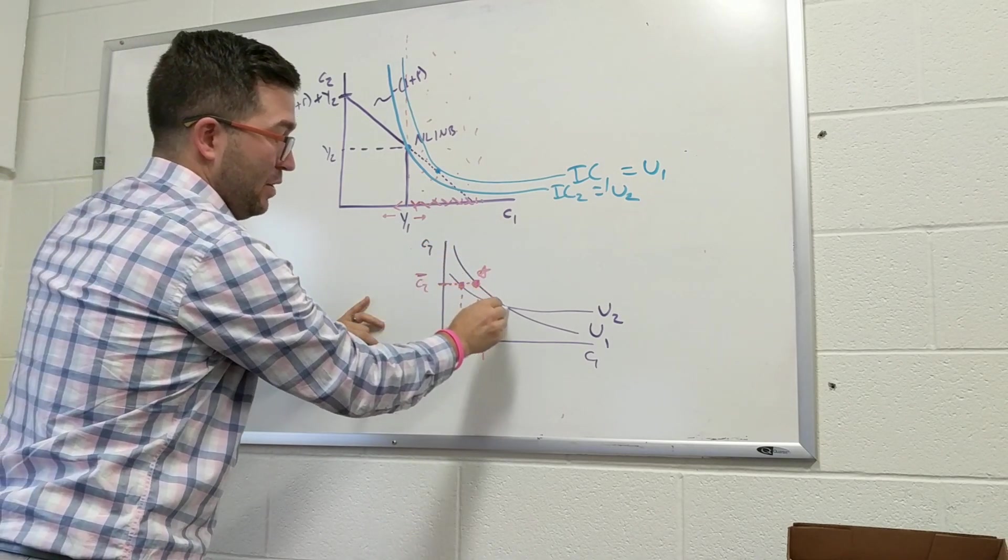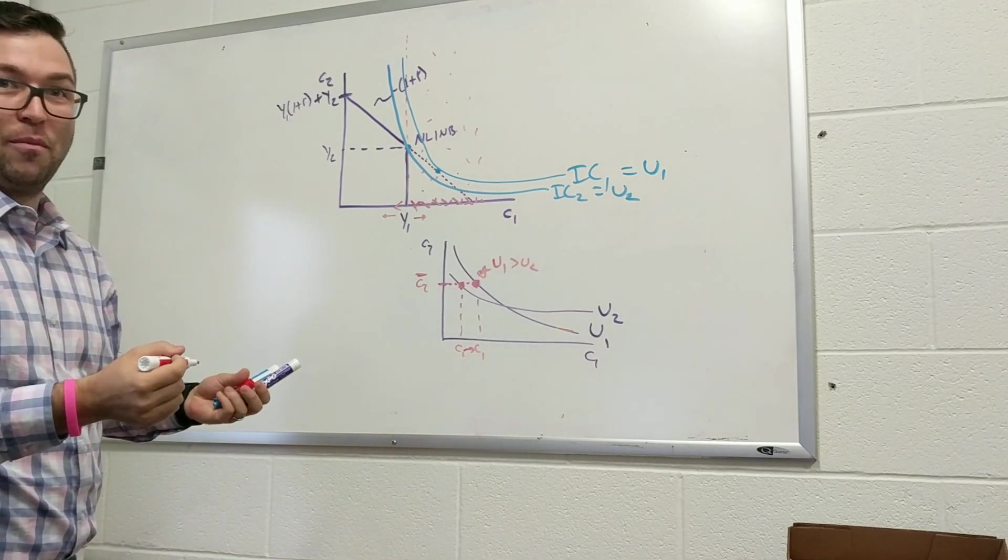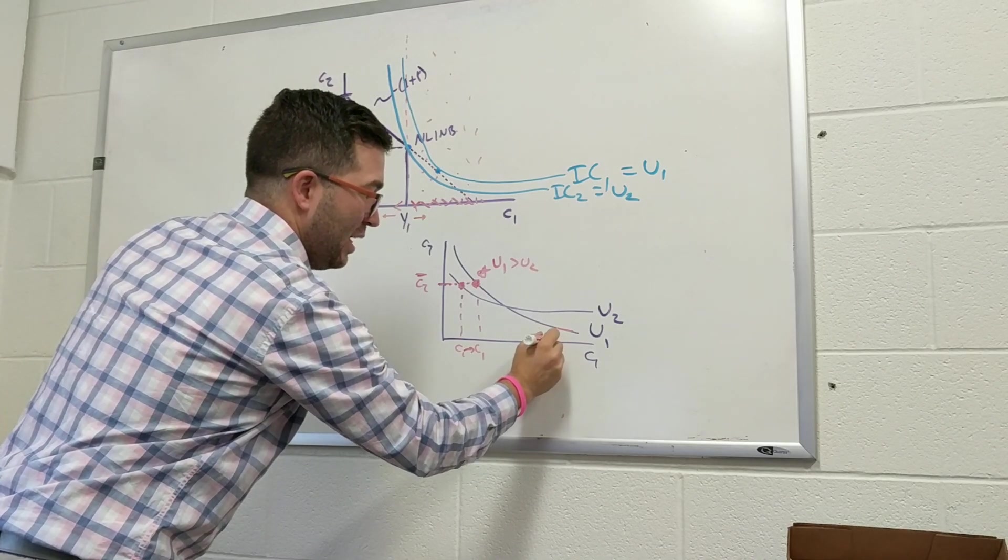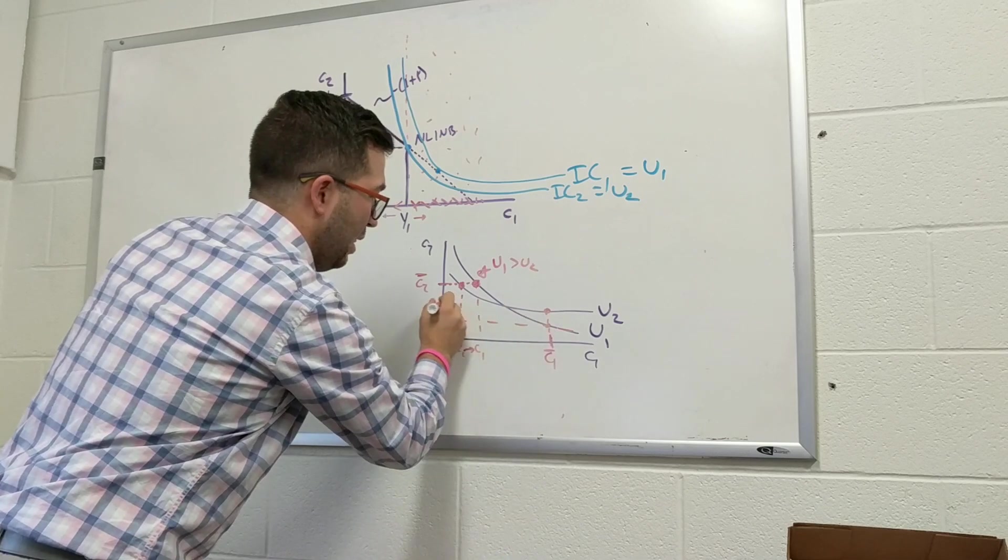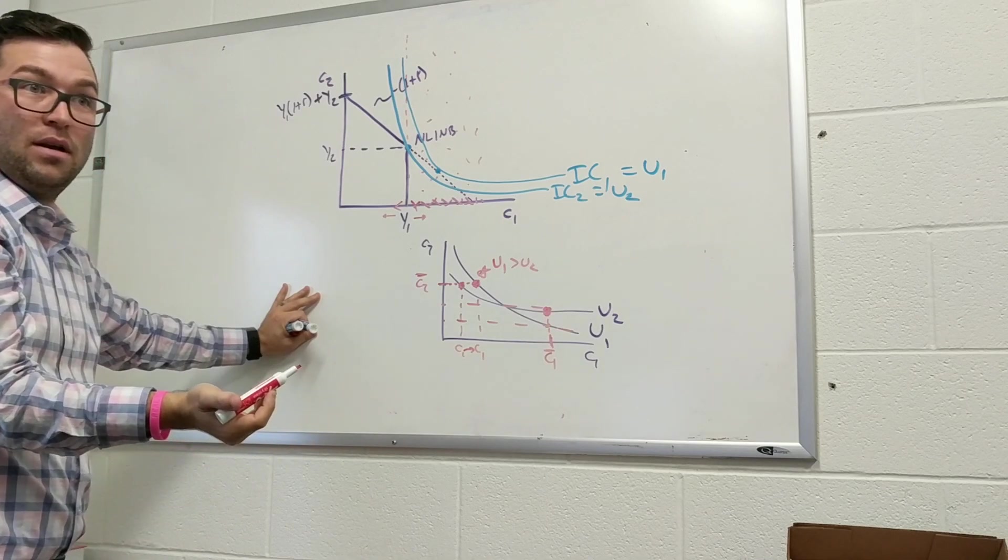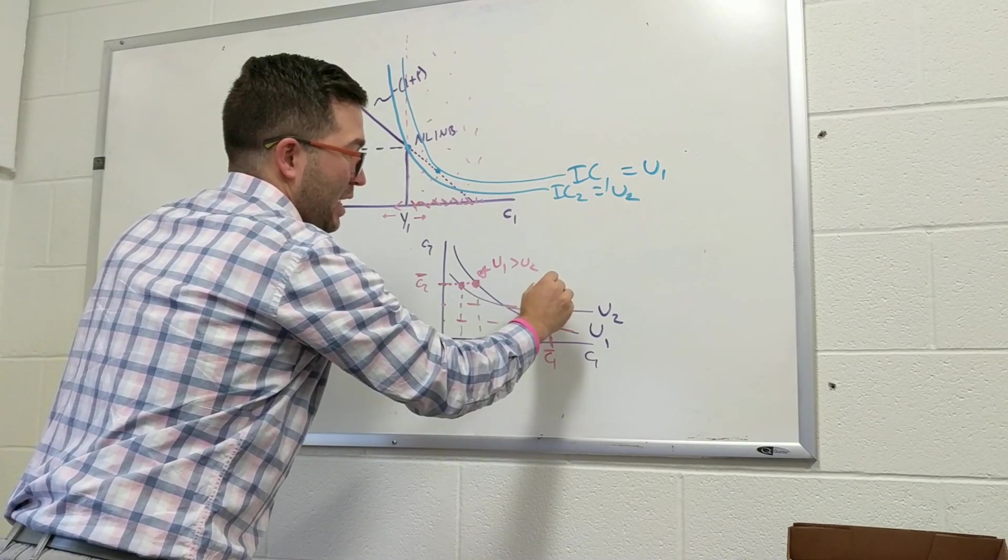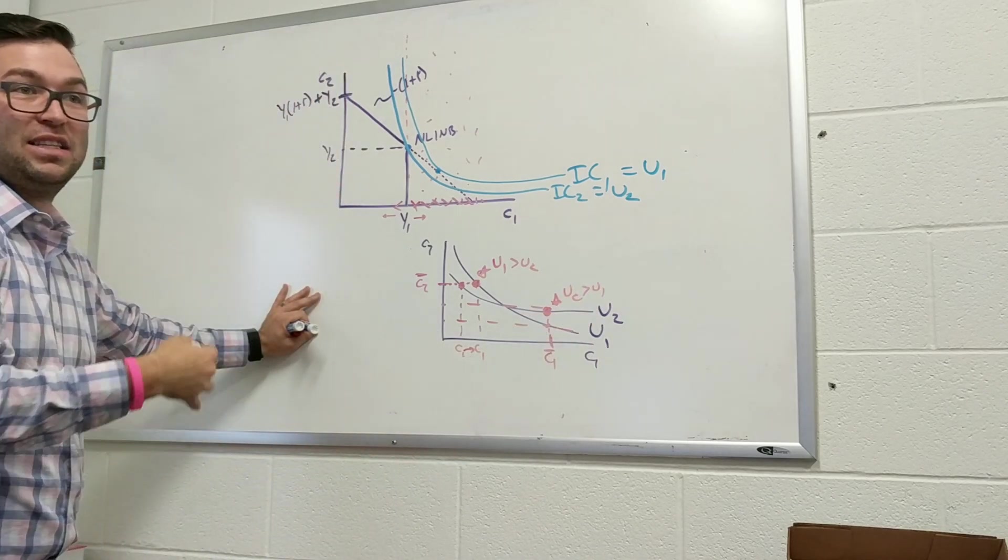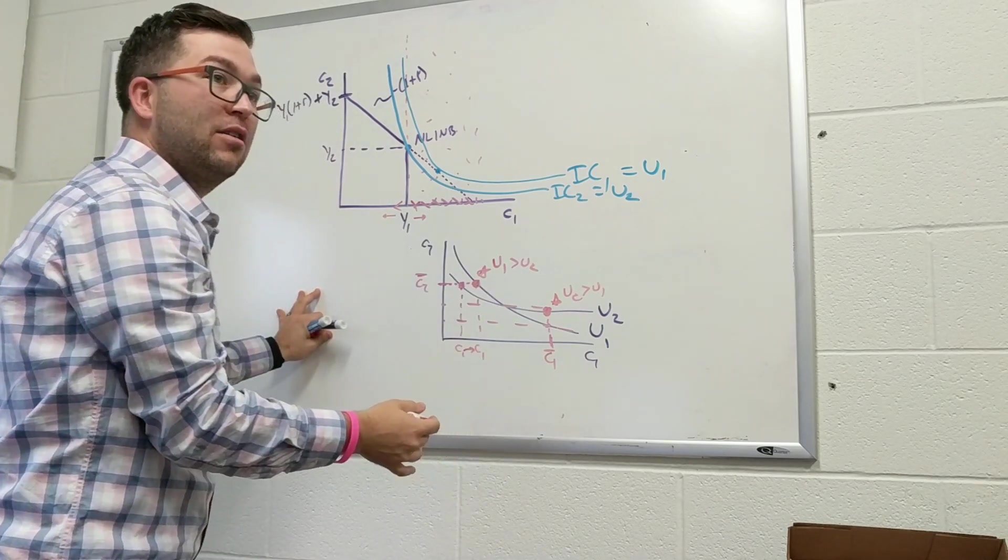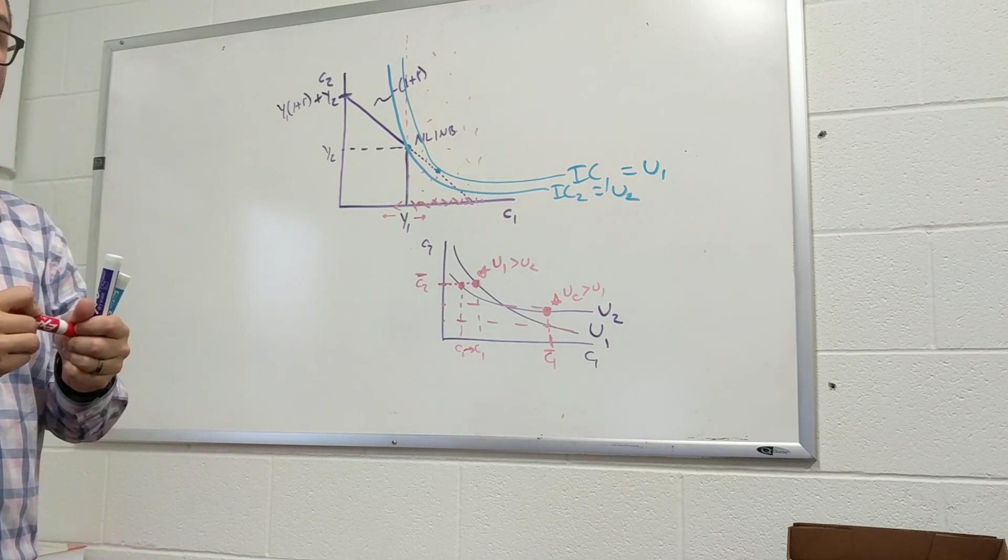So that would tell me that this indifference curve, U1, so this tells me U1 is greater than U2. You can probably see where I'm going with this. If I take a point down here, C1 is constant. I have more C2, so then this point must be better, because it's more of C2. And so this point tells me that U2 is greater than U1, and that's not, you can't do that. So that violates the idea. So you can't have indifference curves that cross, so they have to just be in this shape like that. Perfect.